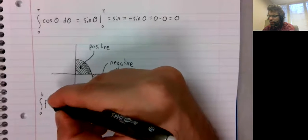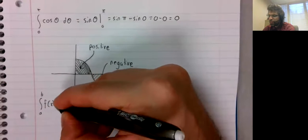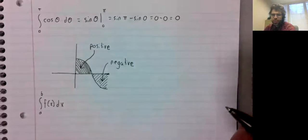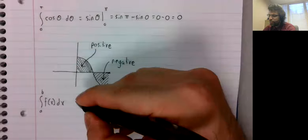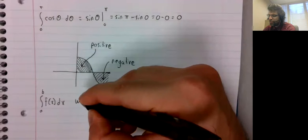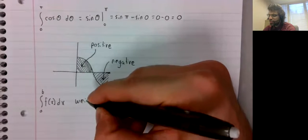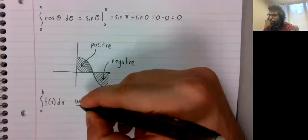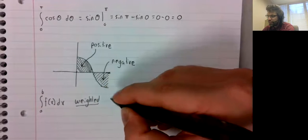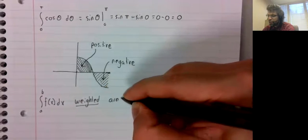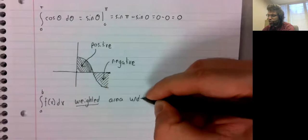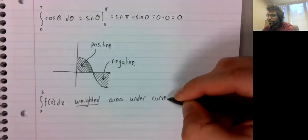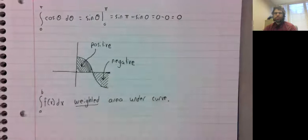One way this is frequently framed is that the integral from a to b of f of x dx is the weighted area under the curve.